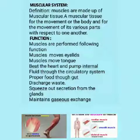Muscular System: Muscles are made up of muscular tissue. A muscular tissue is a group of muscle cells. Muscular tissue is responsible for the movements of the body and for the movements of its various parts with respect to one another. Muscles make up 40 to 50 percent of body weight in most mammals. Muscles are mainly composed of protein, and there are more than 600 muscles in the human body.